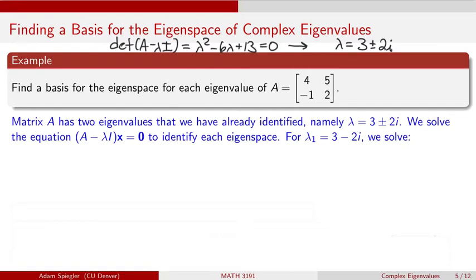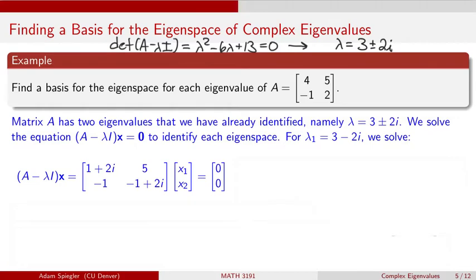So how can we find a basis for the eigenspace for each of these eigenvalues? Let's start by considering the eigenvalue three minus two i, this complex eigenvalue. We're going to solve the same matrix equation, identifying the eigenspace by finding solutions to A minus lambda I times vector x equals the zero vector. Our value for lambda now has real and imaginary parts. So A minus lambda gives us four minus three, which is one, and then we subtract minus two i, giving us plus two i.